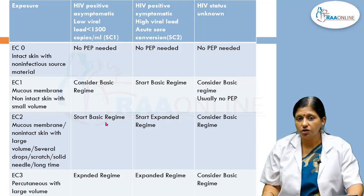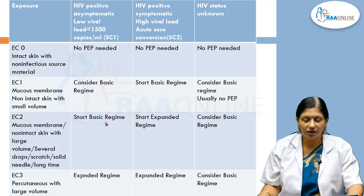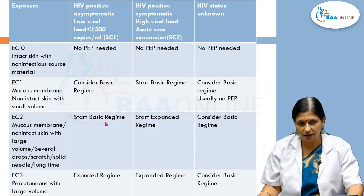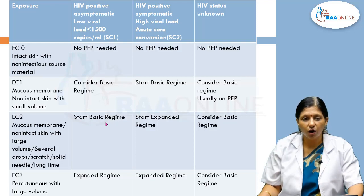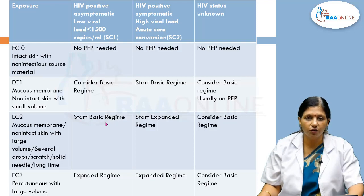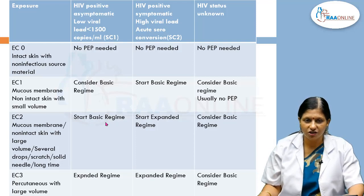If the exposure was to an HIV-positive asymptomatic individual via intact skin — whether the source is HIV-positive asymptomatic, HIV-positive symptomatic, or HIV status unknown — no PEP is needed for intact skin exposure. For a grade 1 exposure involving mucous membrane or non-intact skin with a small volume and low viral load, give the basic regimen. High viral load exposure grade 1 also requires the basic regimen, as does HIV-unknown status.